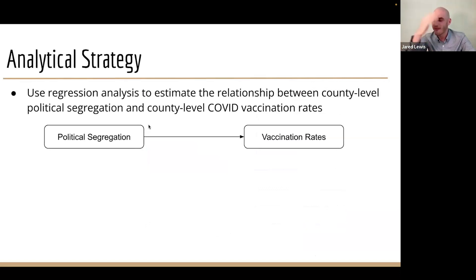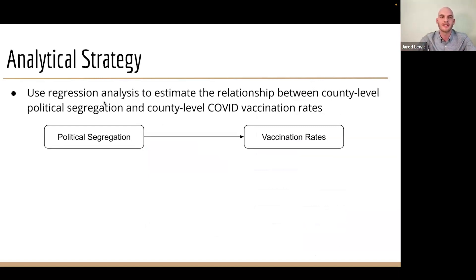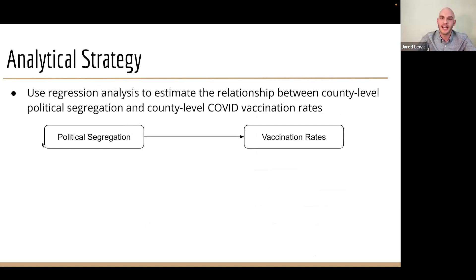Now we have an idea of what data we're working with. Let's look at our high-level analytical strategy before we break it down into the individual tools we built. At the highest level, we're trying to use regression analysis to estimate the impact that political segregation has on a county's vaccination rates.